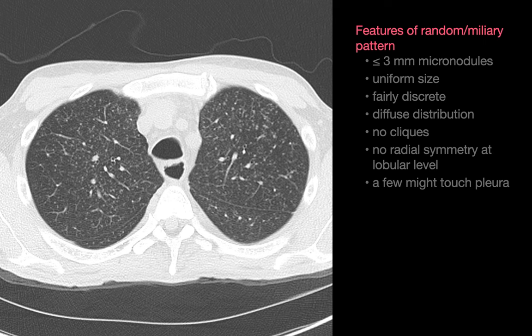These micronodules are all relatively discrete — not indistinct and fuzzy like a centrilobular nodular interstitial pattern. They are relatively diffusely distributed, meaning there are no regions of sparing of lung. The dots don't form clusters or clumps. There's no radial symmetry at the lobular level, and with a random or miliary nodular interstitial pattern, a few of these dots might touch the pleura.